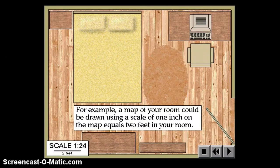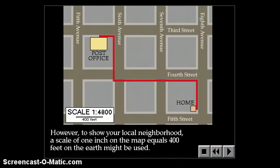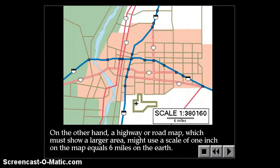For example, a map of your room could be drawn using a scale of 1 inch on the map equals 2 feet in your bedroom. However, to show your local neighborhood, a scale of 1 inch on the map equals 400 feet on the Earth might be used. On the other hand, a highway or road map, which must show a larger area, must use a scale of 1 inch on the map equals 6 miles on Earth.